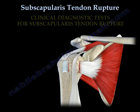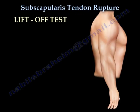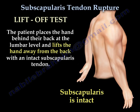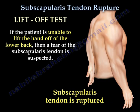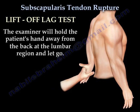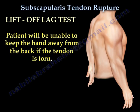Clinical diagnostic tests for subscapularis tendon rupture. Lift-off test: the patient places the hand behind their back at the lumbar level and lifts the hand away from the back with an intact subscapularis tendon. If the patient is unable to lift the hand off the lower back, a tear of the subscapularis tendon is suspected. Lift-off lag test: the examiner holds the patient's hand away from the back at the lumbar region and lets go. The patient will be unable to keep the hand away from the back if the tendon is torn.